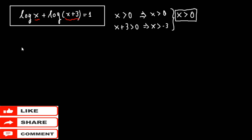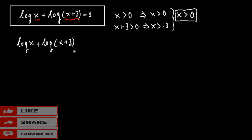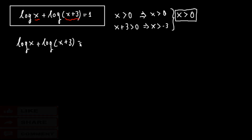Now let's rewrite it here and start solving it. We have log to the base of 10 — we don't write it — so the equation is: log x plus log(x plus 3) equals 1.